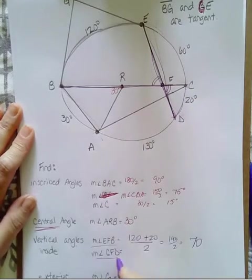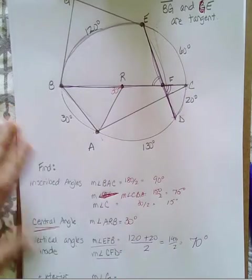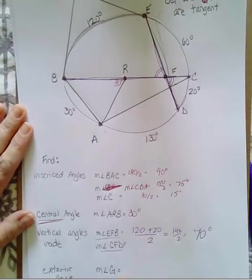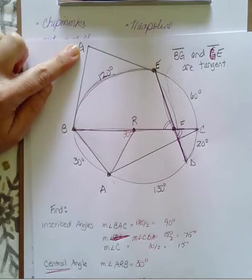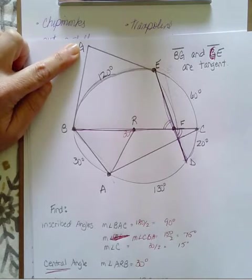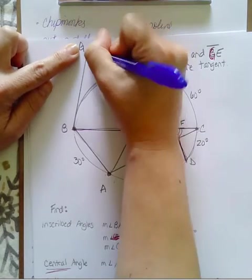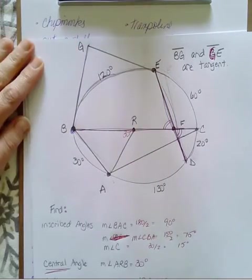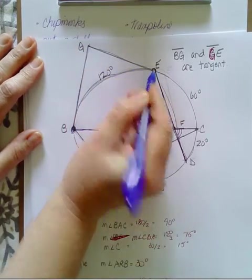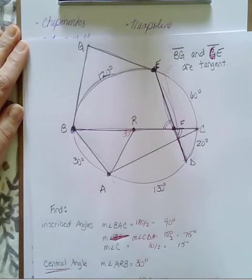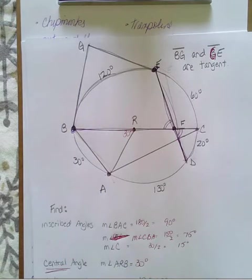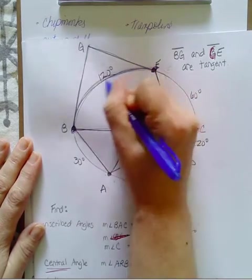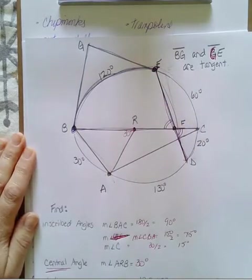Okay, vertical angles. So our vertical angles are going to be formed by these two sides here. Maybe I'll draw them in purple. So here's my one side or one segment, and here's the other segment. I should have used a ruler. And they crisscross here at point F. So the two angles that I'm going to find are EFB, which is this guy here, and CFD, and that's this guy down here. They're vertical angles, and they're the same.